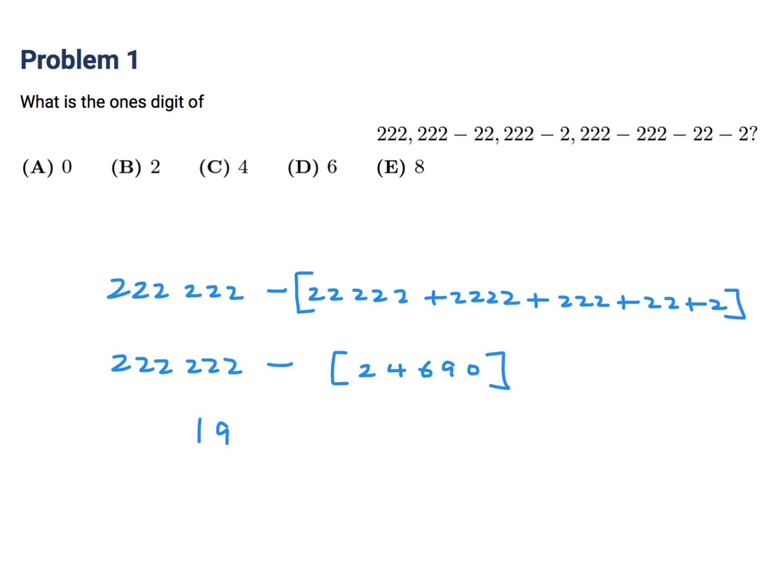the final result is 1, 9, 7, 5, 3, 2. And they want the ones digit. The ones digit is a 2, and that would be choice B.